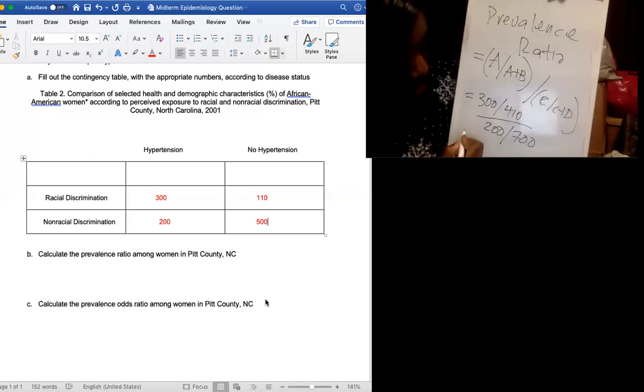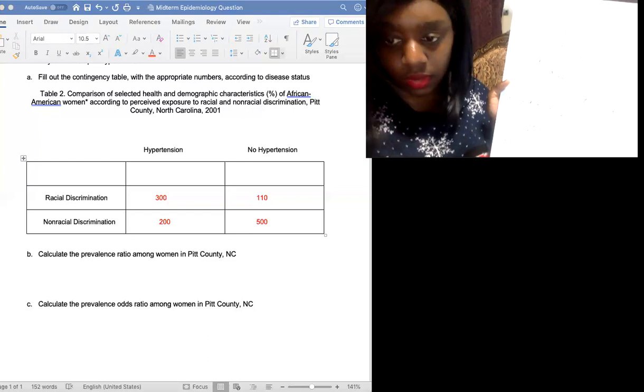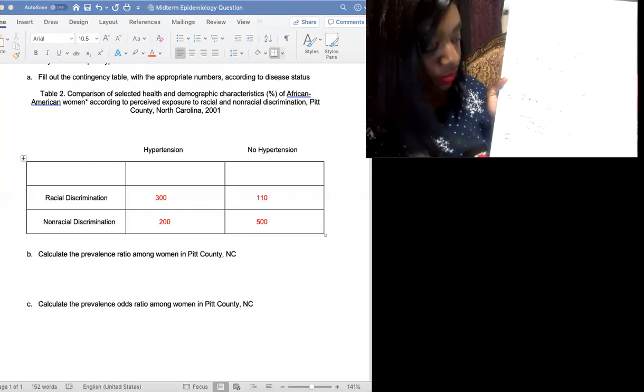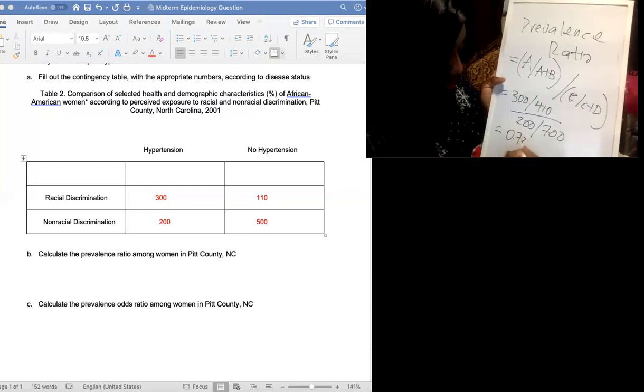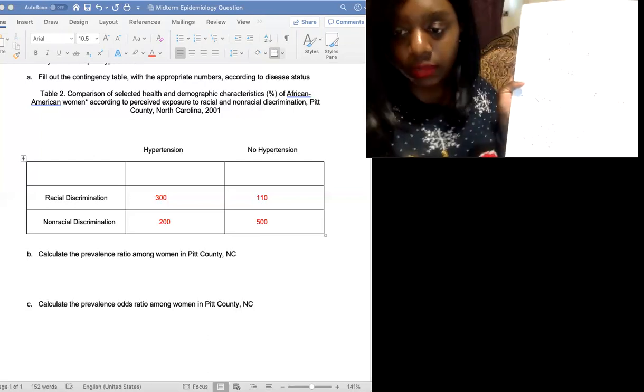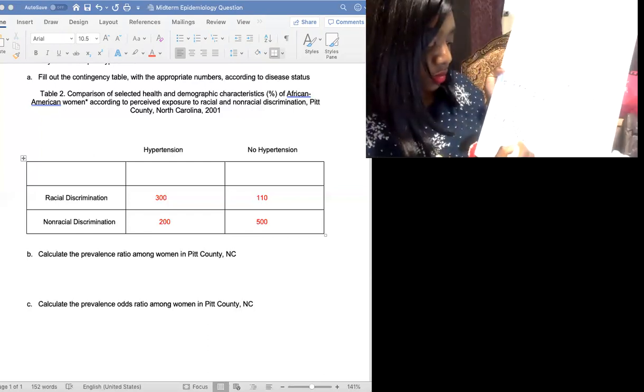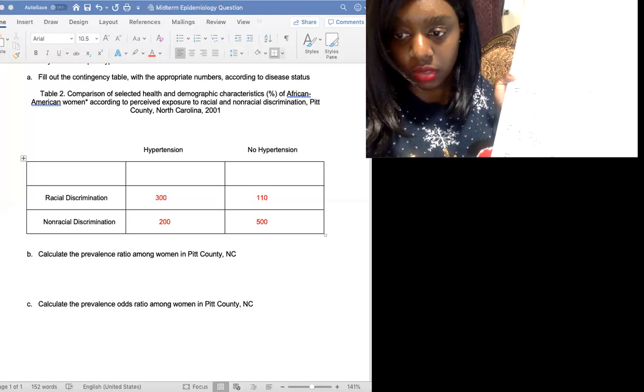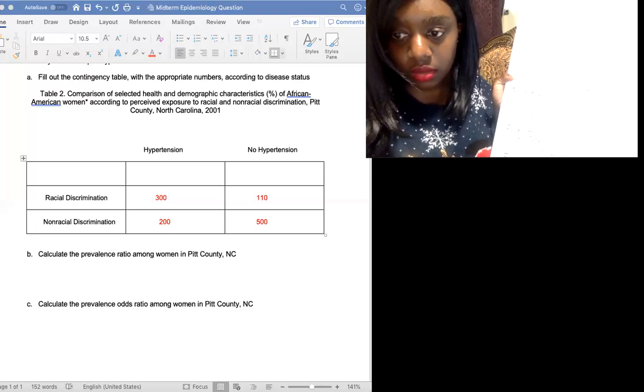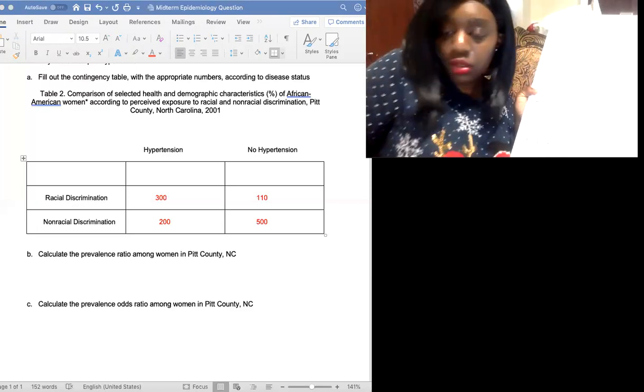So we have the 300 divided by 410, which was the total column. And now we have the c, 200 divided by 700. As you all can see, we're going to put these numbers in, plug and chug. So 300 divided by 410, 0.731. And then 200 divided by 700, 0.285. And this should give us 0.731 divided by 0.285. That's 2.56.